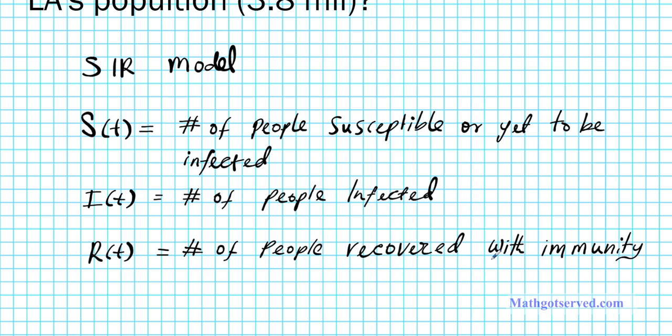Just to make sure we understand what's going on, let's label the functions. dS/dt = −βSI is the susceptible equation — the instantaneous rate of change of those susceptible to the disease. dR/dt = γI is the recovered equation, where recovery means recovered with immunity. And dI/dt is the infected equation.